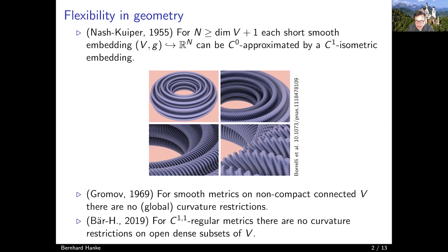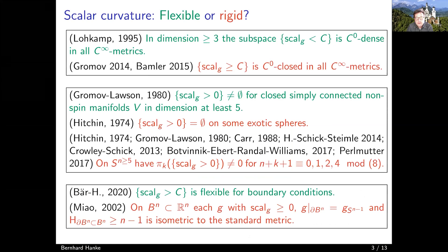Together with Christian Bär I proved a flexibility result — an existence result of a very general nature — for C^{1,1} regular metrics, just a little below C^2, of any kind on open dense subsets of smooth manifolds. So there are C^{1,1} regular metrics such that there are no curvature restrictions on open dense subsets of a given manifold V.